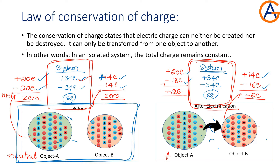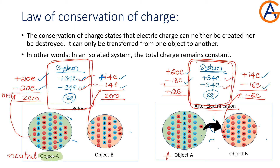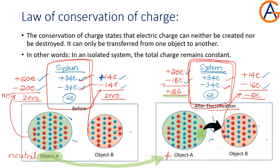This means that in the isolated system, the total charge remains constant. Object A became positively charged because it lost some of its electrons — specifically, it lost two electrons to object B. So object A becomes positively charged by plus 2E. In this electrification process, no new charge is created in the whole system. Only transfer of charges has taken place from one body to another. Whenever any object loses its electrons, it becomes positively charged; whenever it gains electrons, it becomes negatively charged.